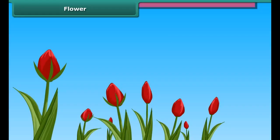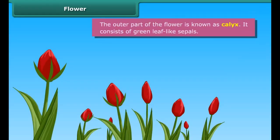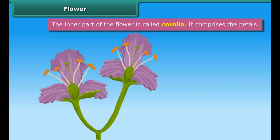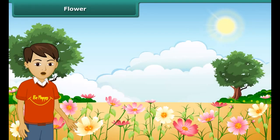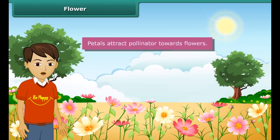The outer part of the flower is known as the calyx. It consists of green leaf-like sepals. The inner part of the flower is called the corolla. It comprises the petals. Different flowers have petals of different colors. Petals attract pollinators towards the flower.